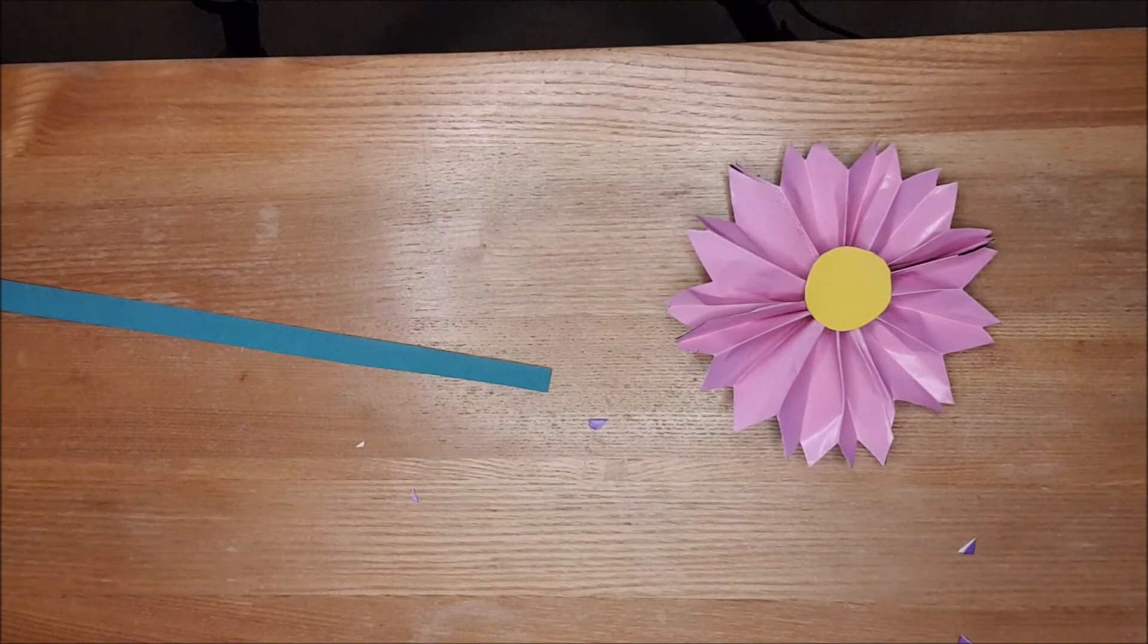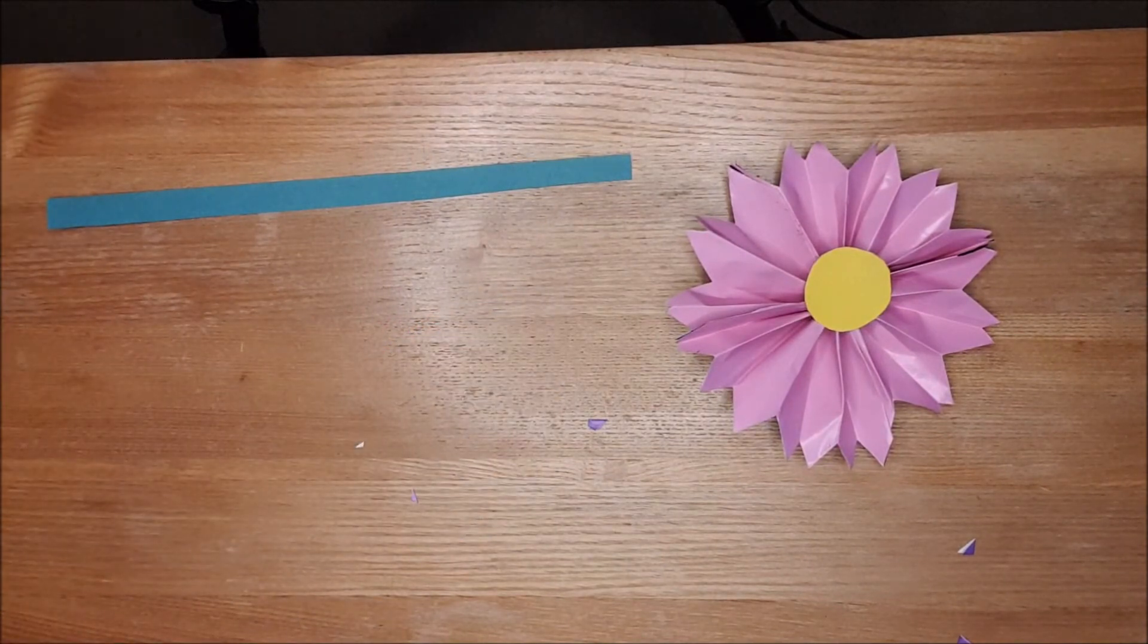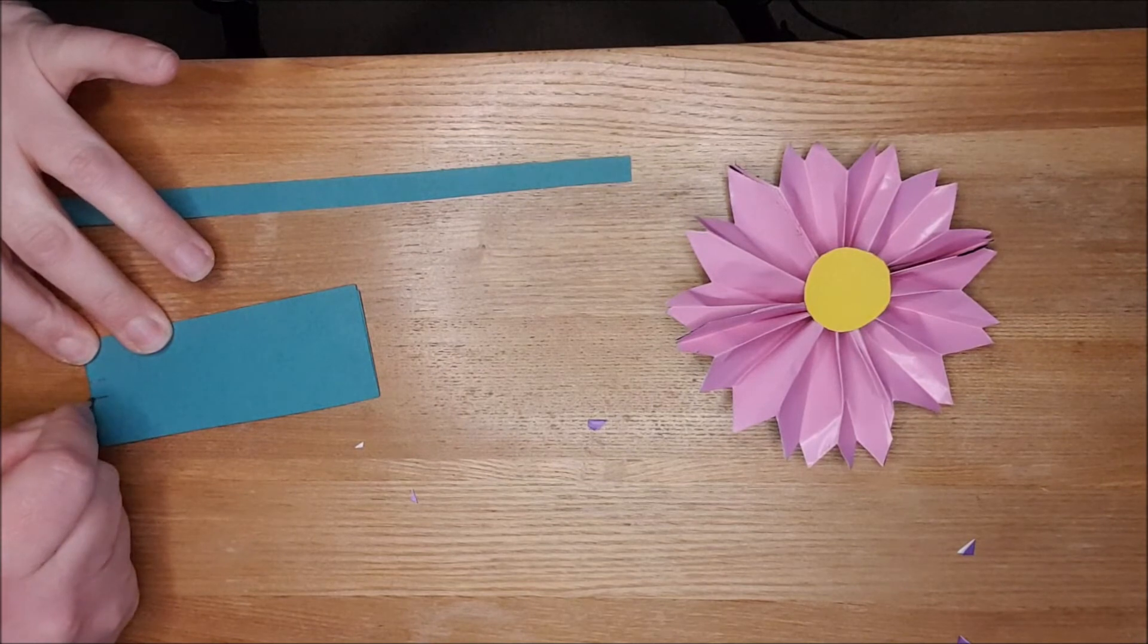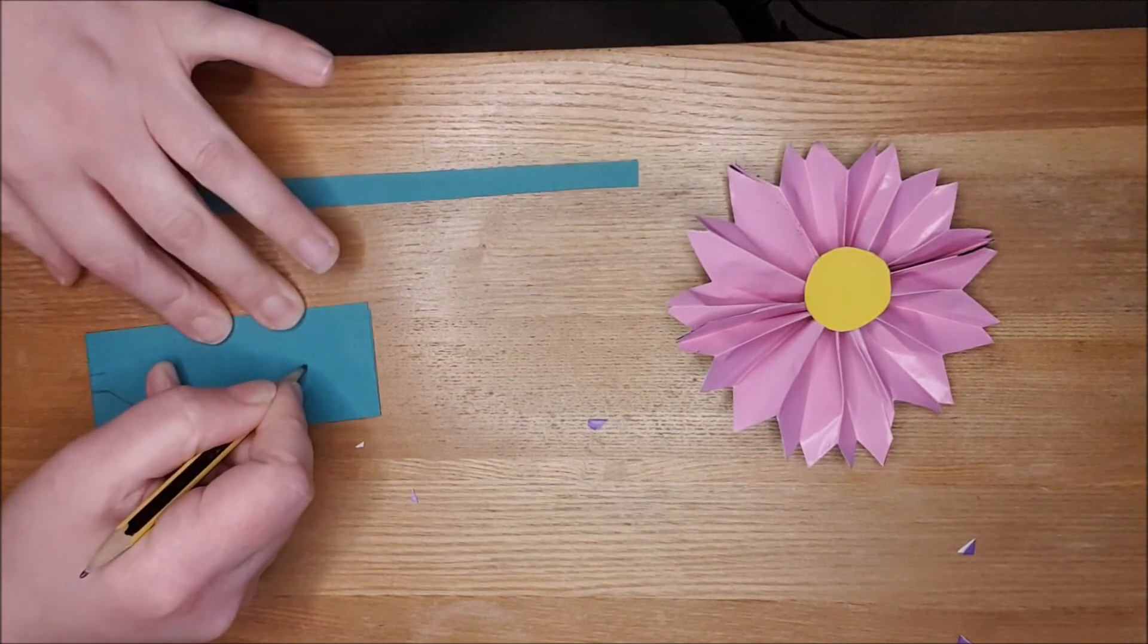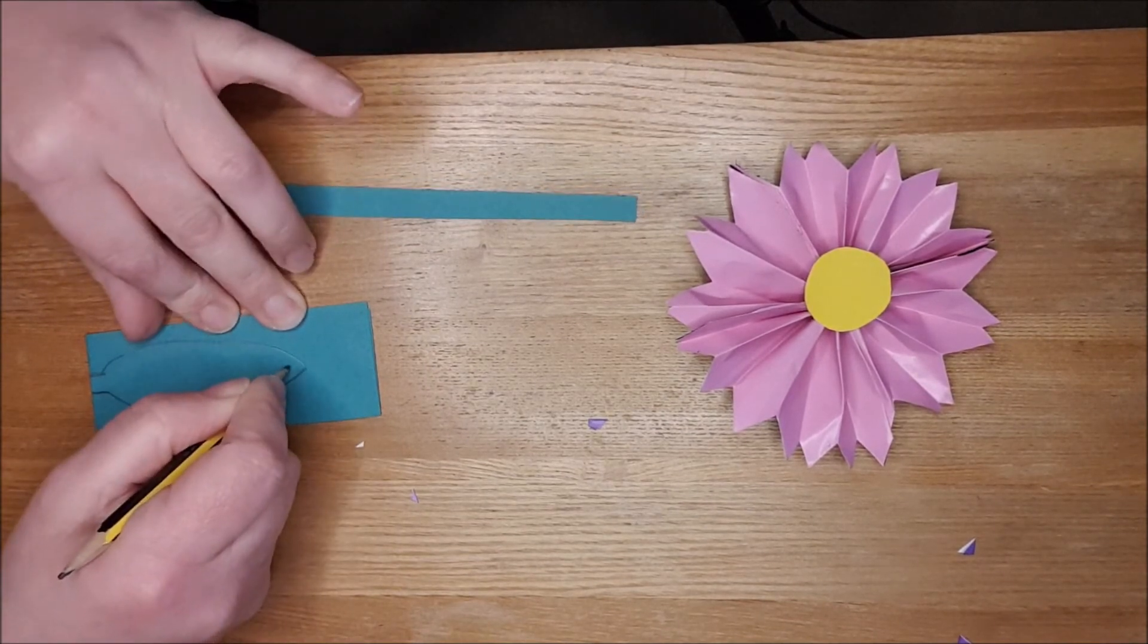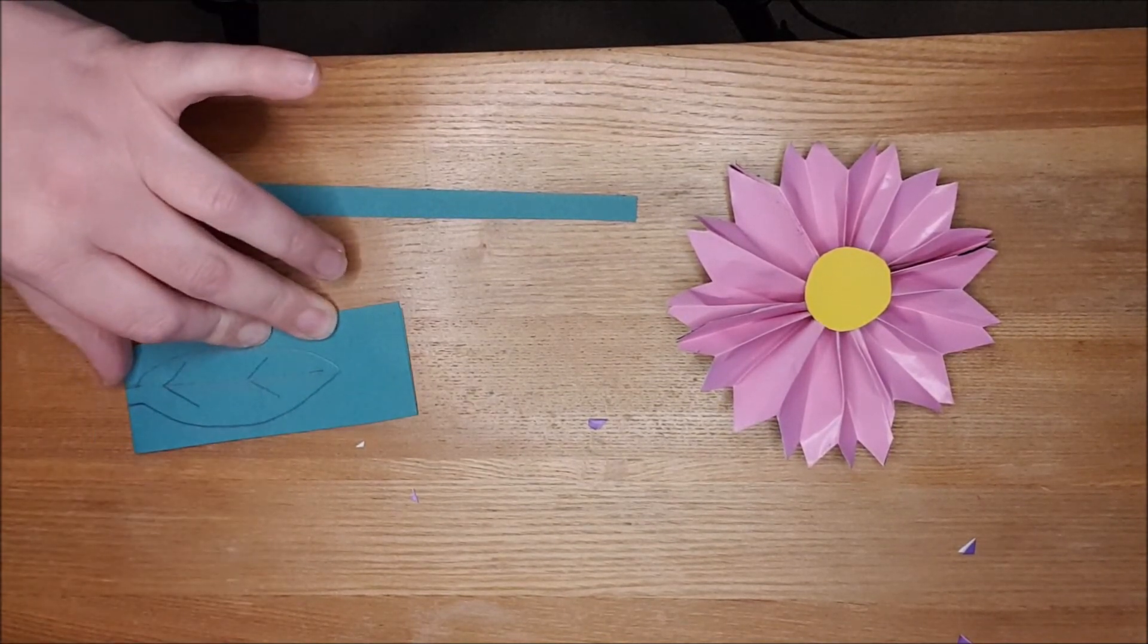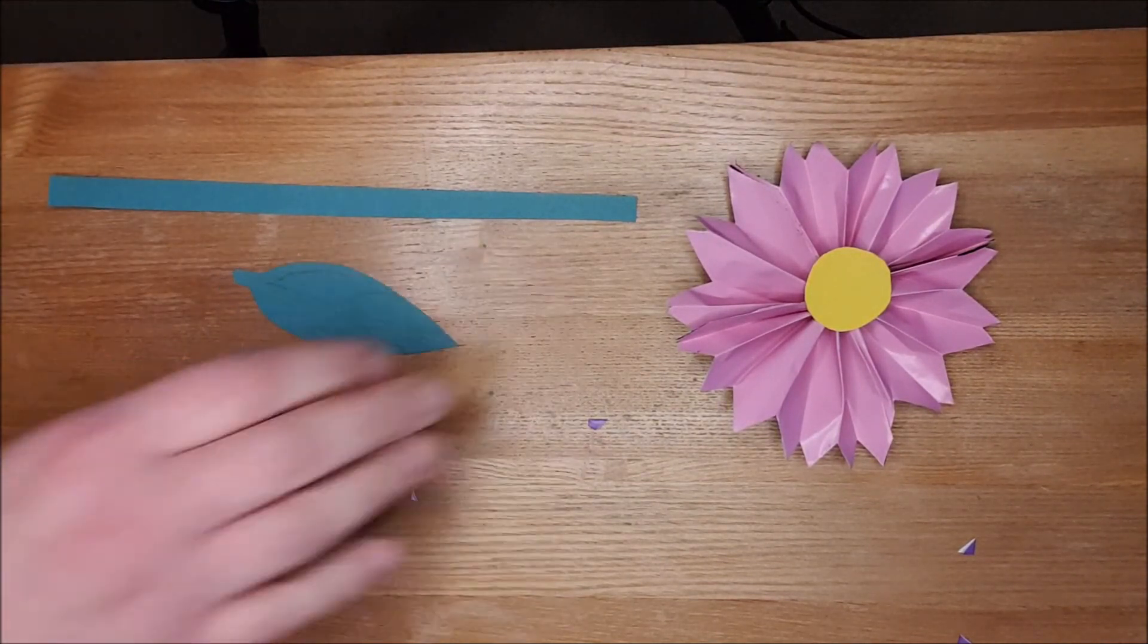Then, with another piece of green card, so that's my stalk, I'm going to take a piece of green card, and I'm going to fold it over, and I'm going to draw a leaf shape. So it's got a bit of a stem, and then I'm going to go round for the leaf, up to the point, and then round here, like that. And then do some lines for the leaves, and then I'm going to cut that out, and I end up with two leaves, like this.